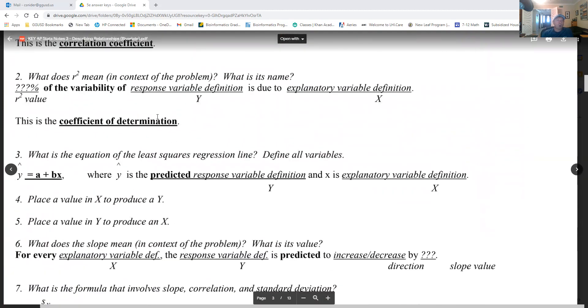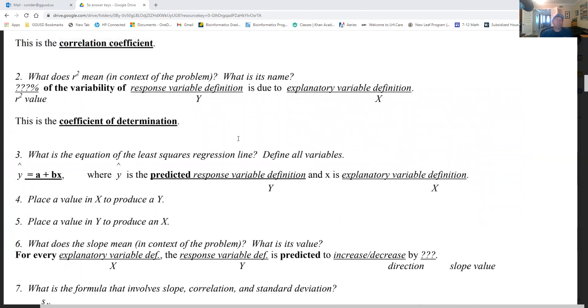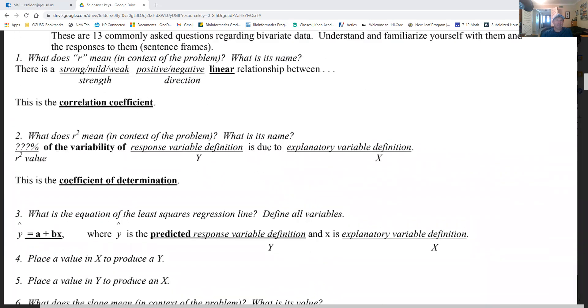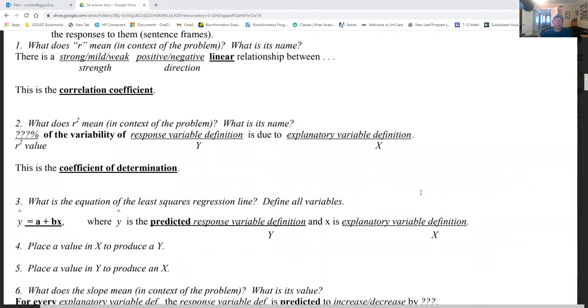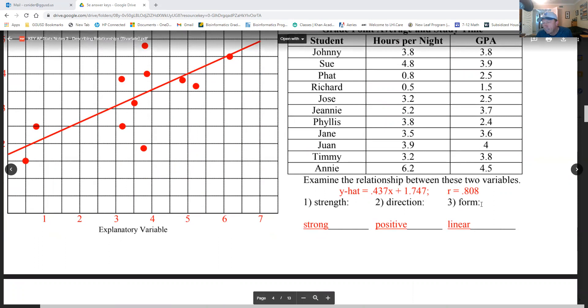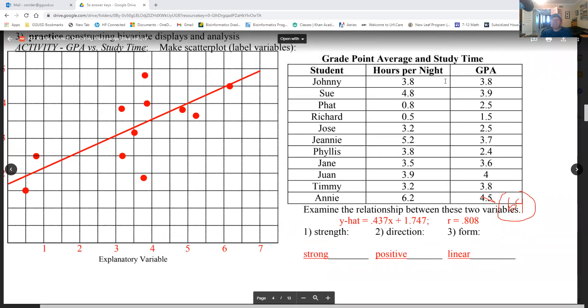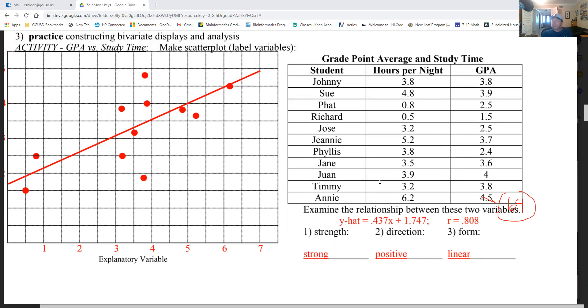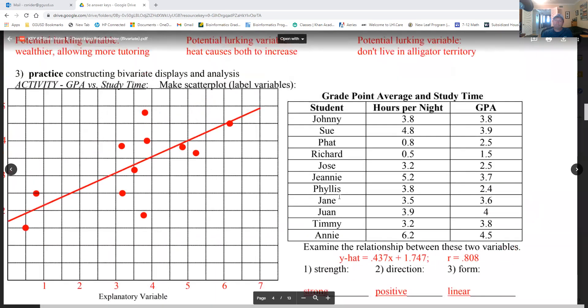The second question: what does r squared mean in context of the problem? What is its name? R squared is the percent of variability of y due to x. We have to figure out what r squared is, so I'm going to square r here. I'm just going to do 0.8. So 0.8 squared is 0.64. I'm just going to do 0.8 squared. All right, so 64% of the variability in GPA is due to how many hours you study per night. 64% of the variability in GPA is due to how many hours you study per night. That's kind of cool. And that makes sense. It's not all about the hours you study, it's about how smart you are, how easy it is. There's all kinds of factors, but 64% of it is due to how many hours you study.